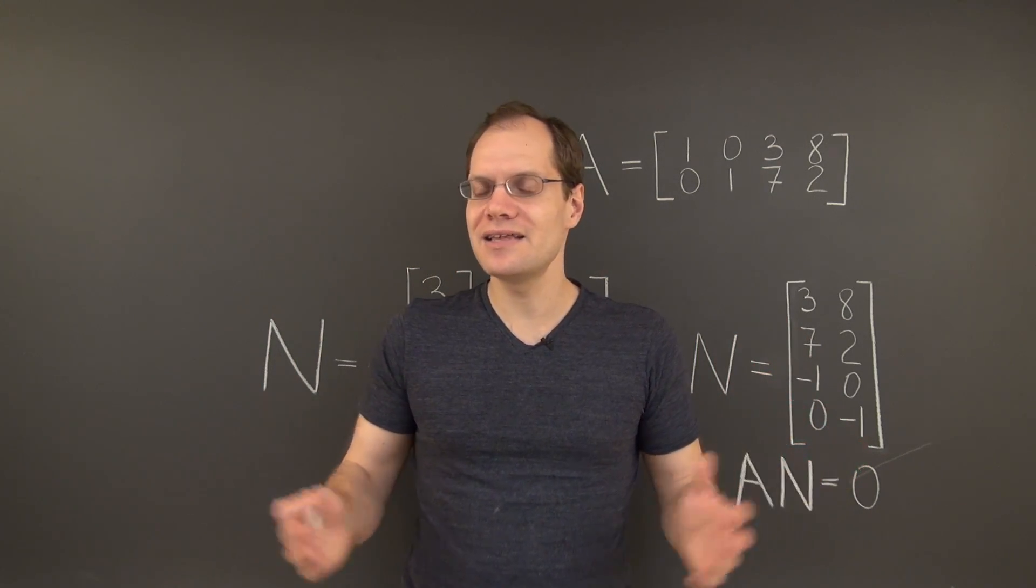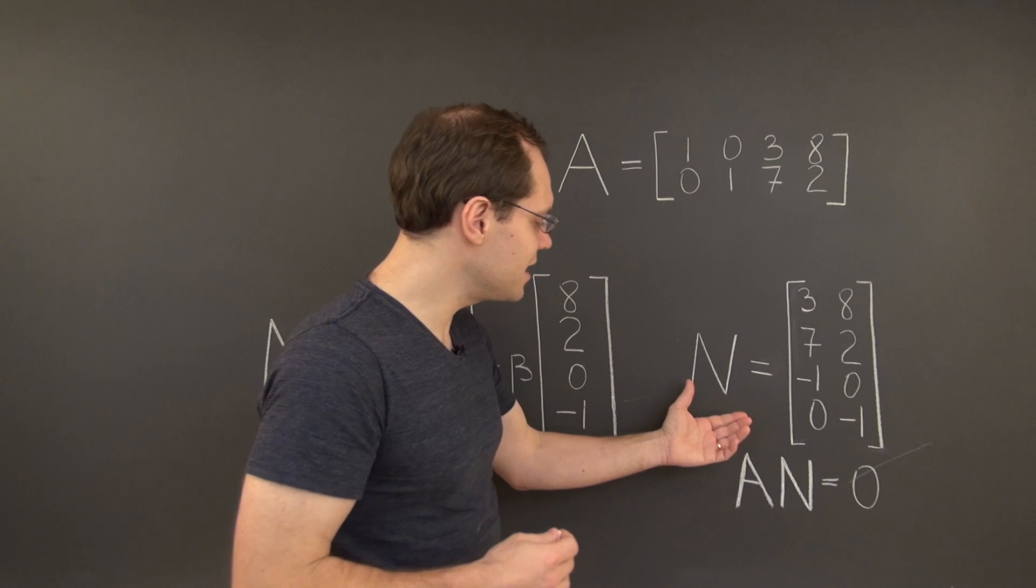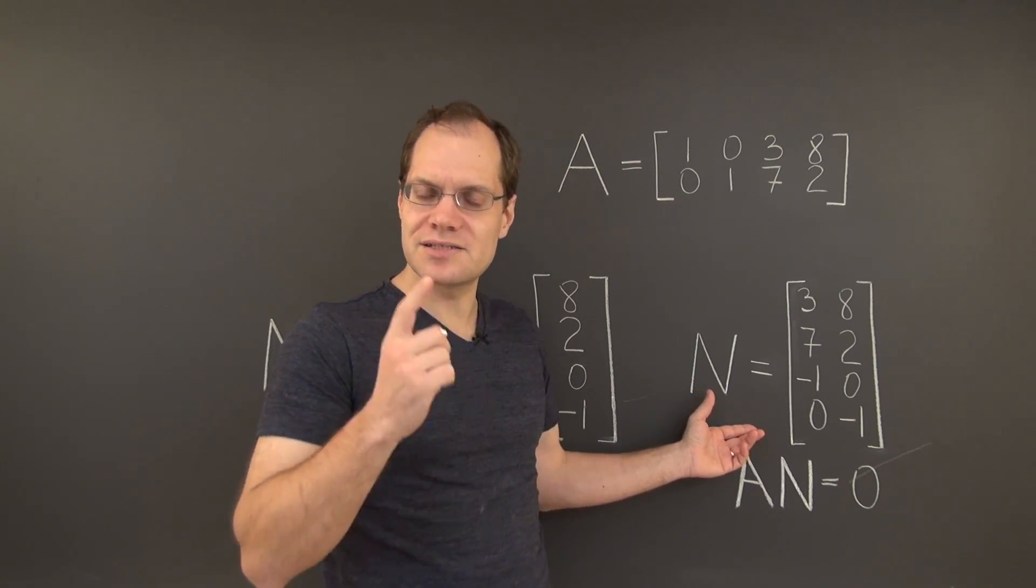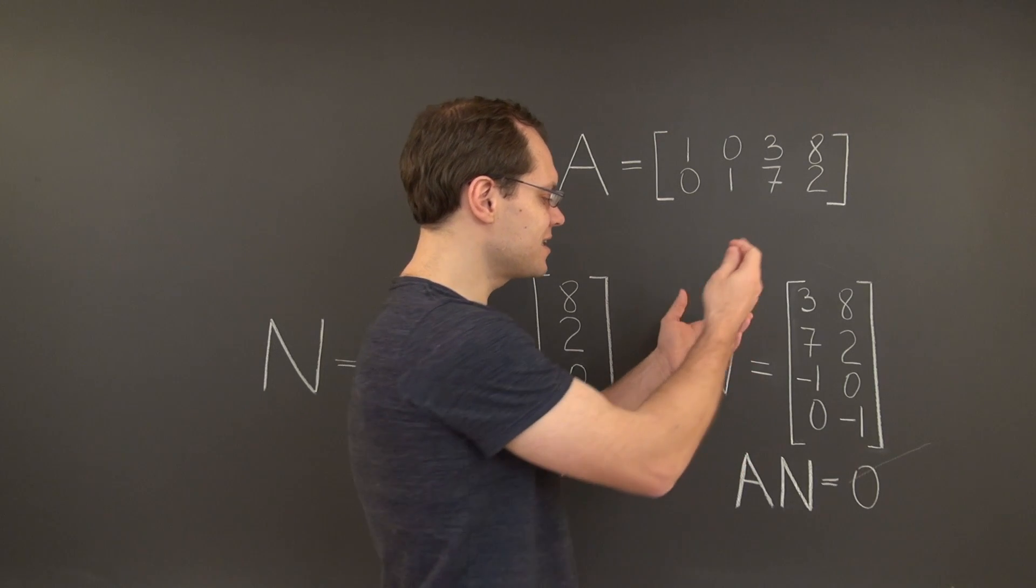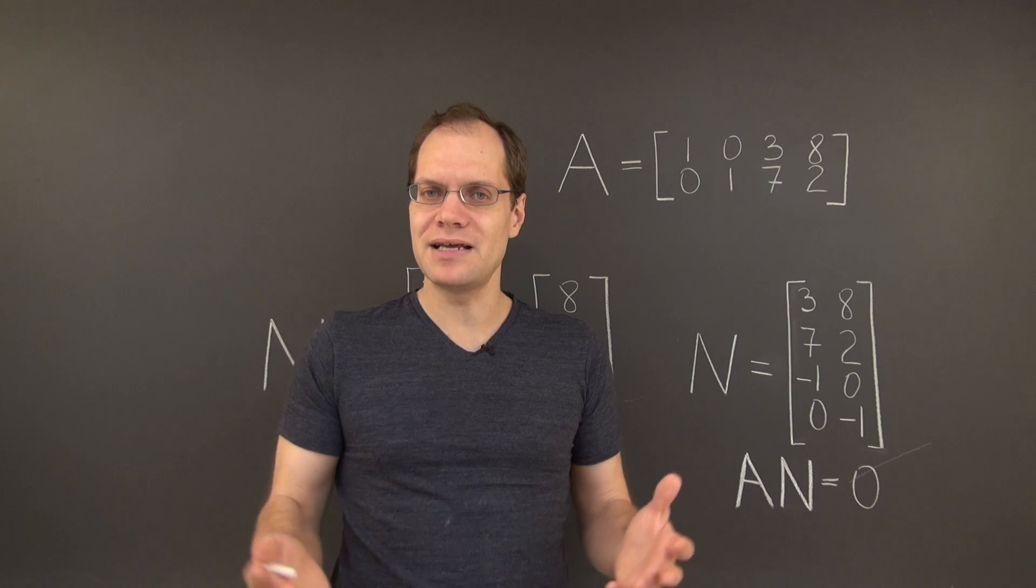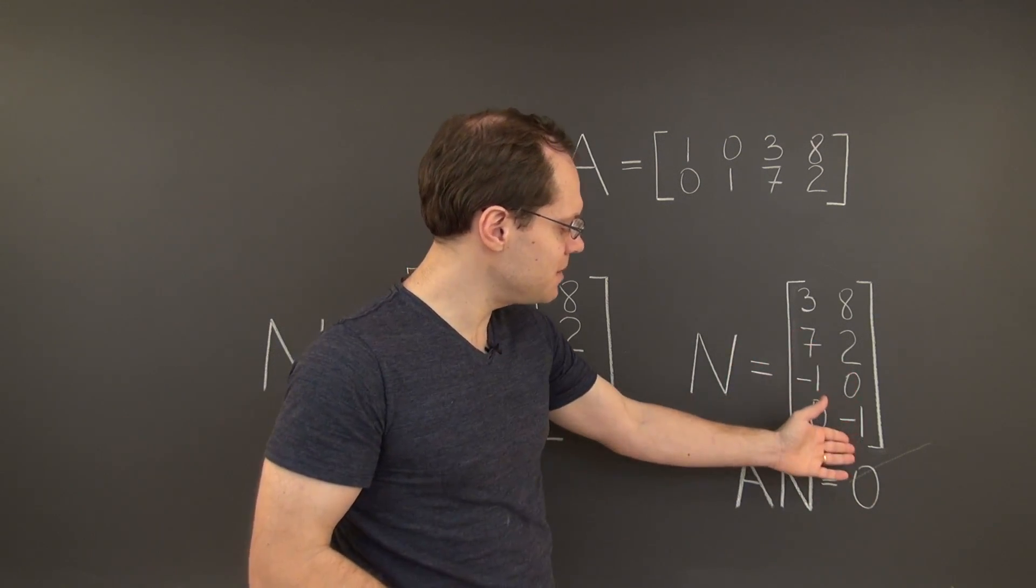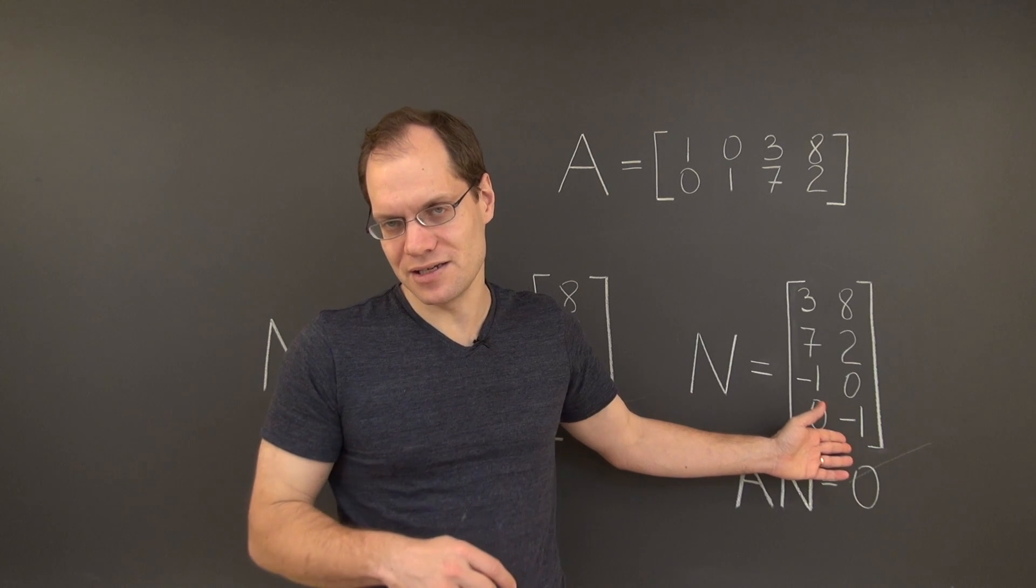So we're not all of a sudden saying that null spaces are now matrices. What we are saying is that this matrix represents the null space. More specifically, the null space is the column space of this matrix. It's the collection of all possible linear combinations of the columns of this matrix. In other words, of the elements of a basis for the null space.